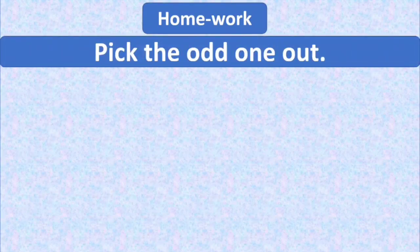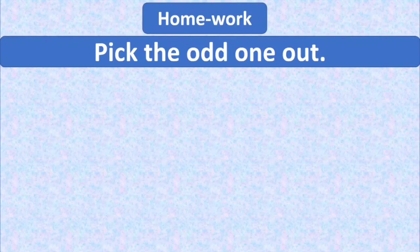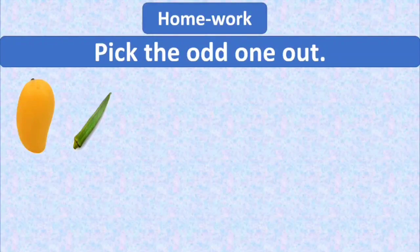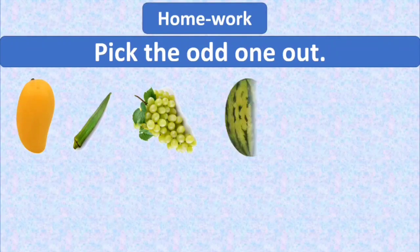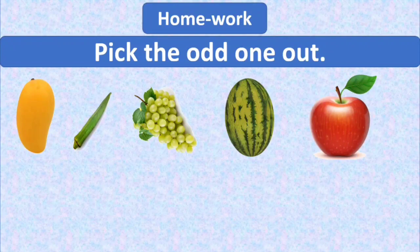Now it's homework time kids. Hope all these patterns are clear to you. You have to revise the exercises at your home. In addition, you have one more question to do as your homework. And the question is, pick the odd one out. The first is a mango, then a lady finger, then a bunch of grapes, then a watermelon, and then an apple. Choose the correct option and put a tick at the odd one.